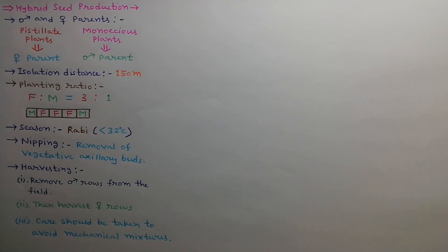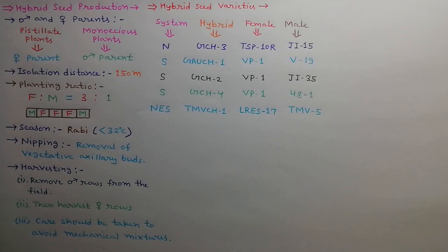Harvest the male rows first and remove them from the field. Then harvest the female rows picking wise. Care should be taken to avoid mechanical mixtures during harvesting, threshing, and drying. Hybrid seed of different varieties are produced in castor using NS and NES systems as shown in the table.